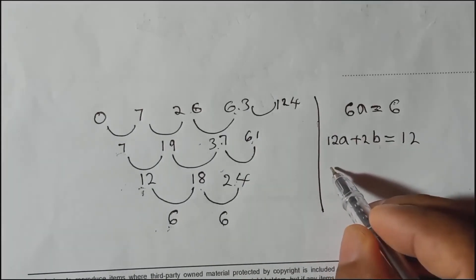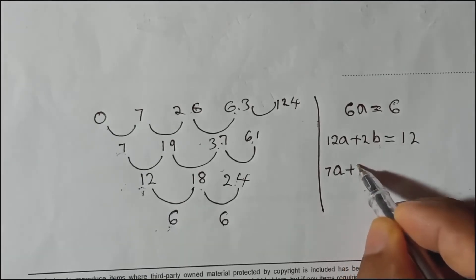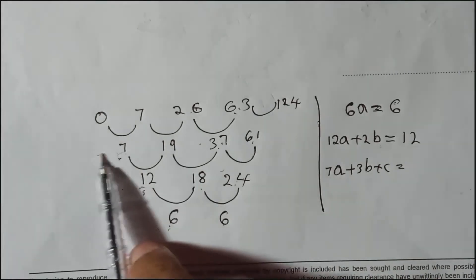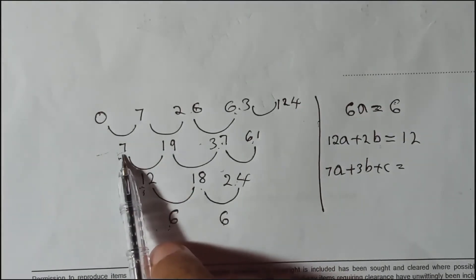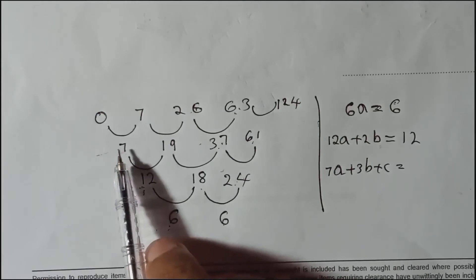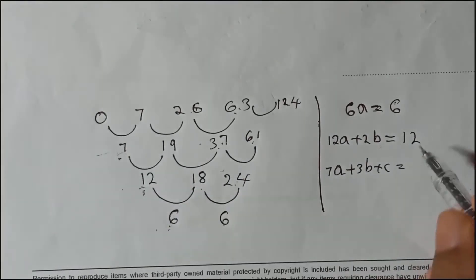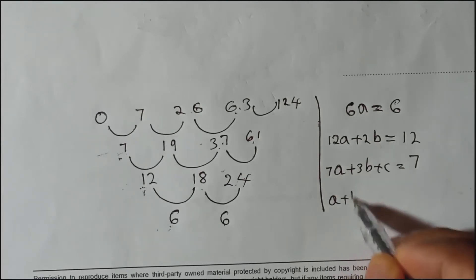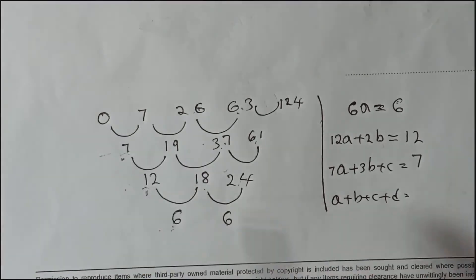Next formula: 7a + 3b + c equals the first term of the first difference — which is u2 minus u1, so that equals 7. And the last formula: a + b + c + d equals the first term of the sequence, which is 0. These four equations you need to remember.